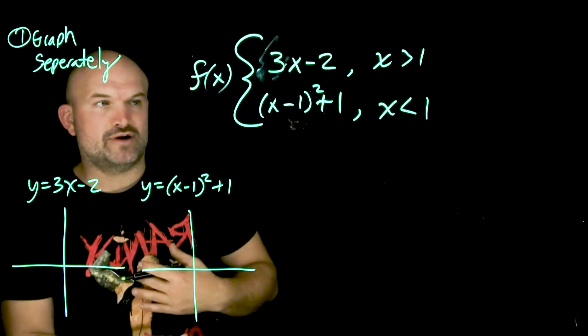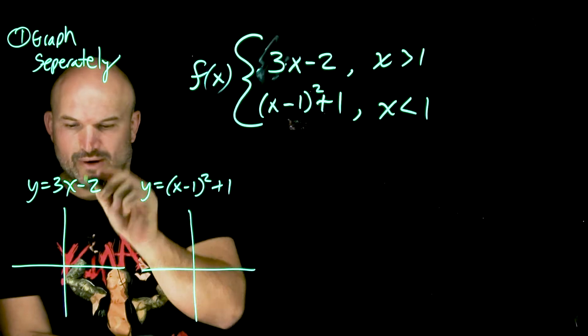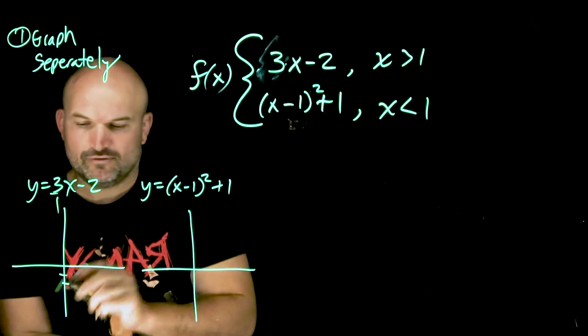Now, this 3x minus 2 is something we learned from algebra 1, right? So we have the y-intercept, which is down negative 2, and then you follow the slope up 3 over 1.